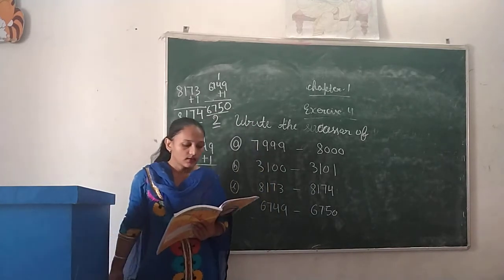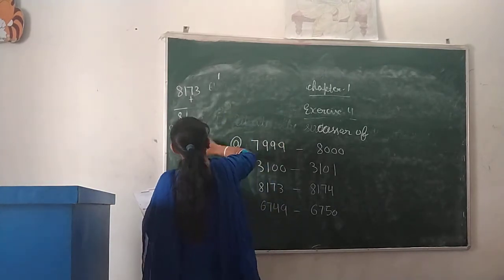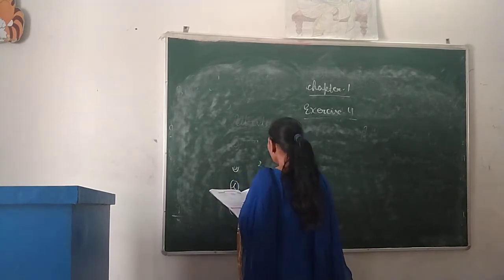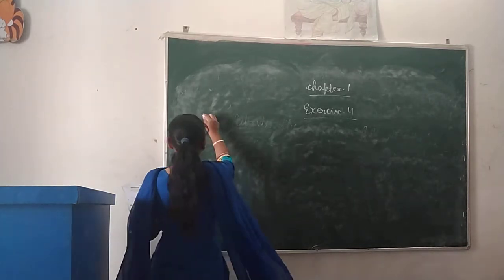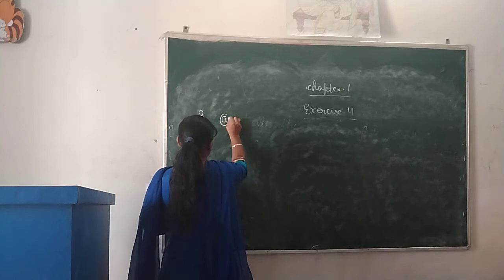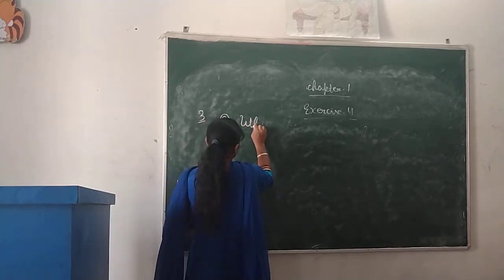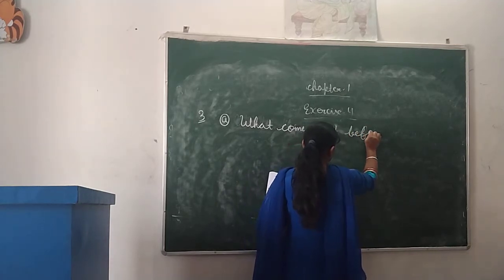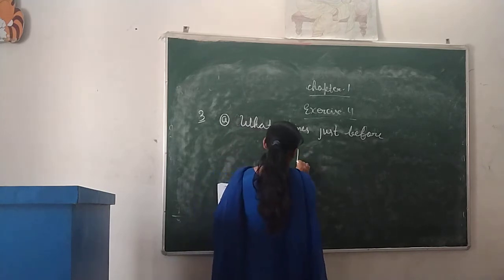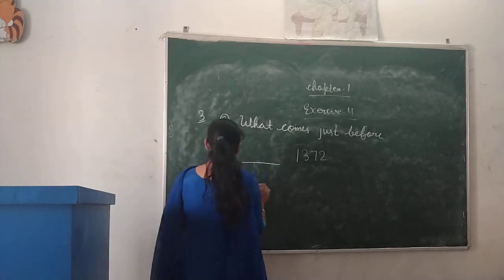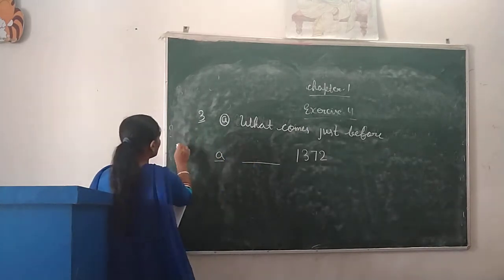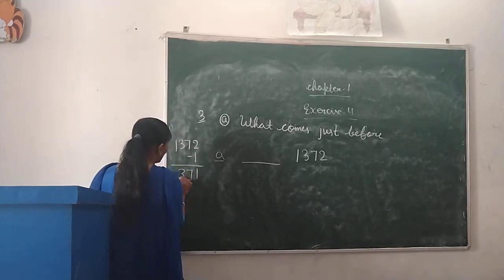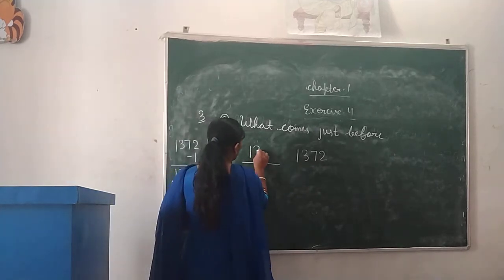Next, Part C: what comes just before? Before means predecessor, so we have to write the number before the given number. Third question, Part A: what comes just before 1,372? We will subtract 1. 2 minus 1 is 1. 7 minus 0 is 7. 3 minus 0 is 3. 1 minus 0 is 1. So the number is 1,371.